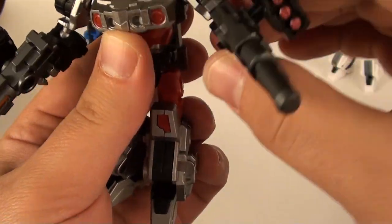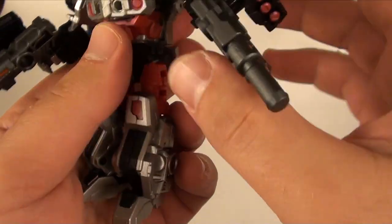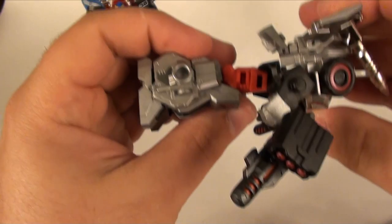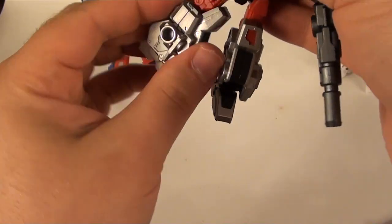The head is on a little ball joint here. The shoulders are on a little ball joint plus the swivel there, so good range of motion. Ball jointed elbow, no problem there.